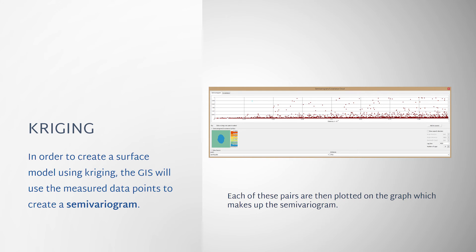In a semi-variogram, each measured data point is paired with every other measured data point. The difference in value between each paired data point is recorded along with the distance between them.